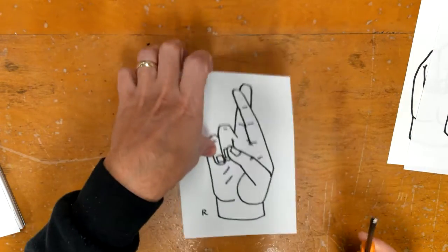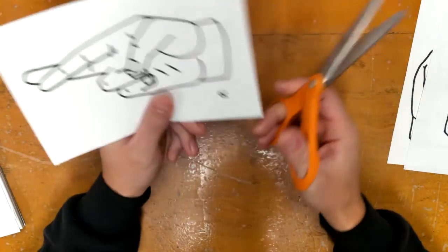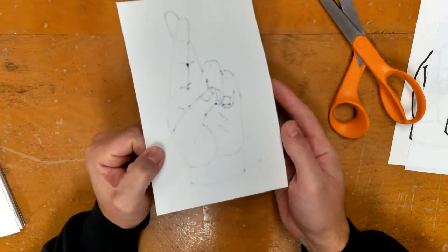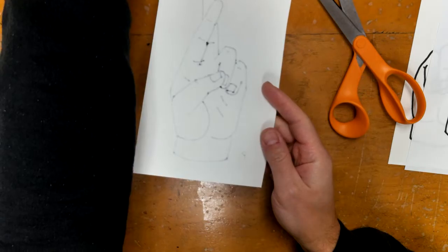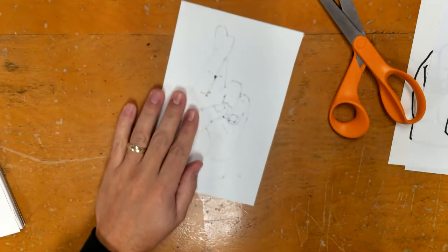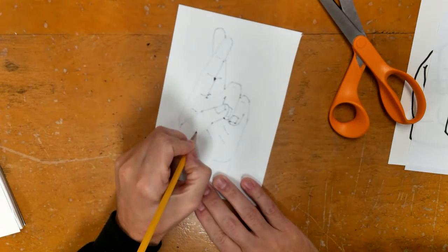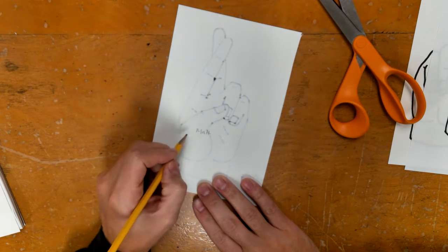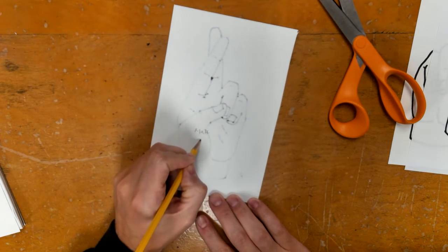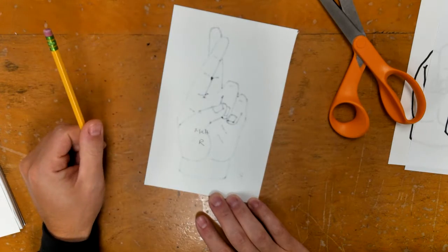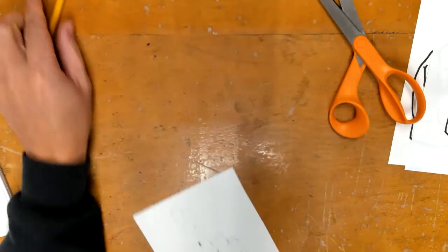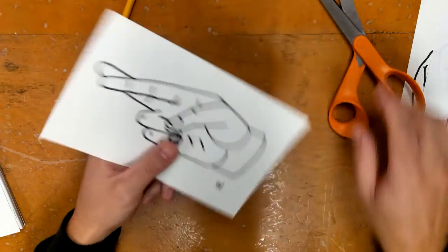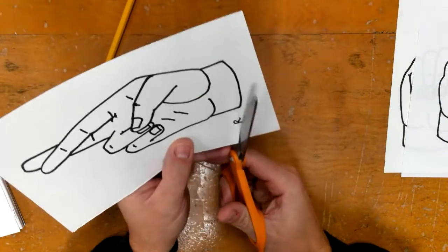So I'm going to cut this hand out. One thing that you can do right away is if you can see your hand on the back, you're going to want to take a pencil and write your name and write the letter of the sign language right away because you're obviously going to be cutting that off.